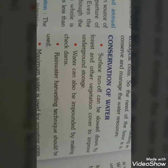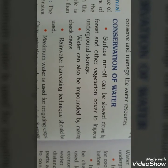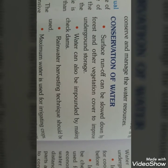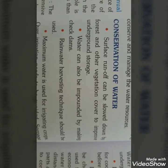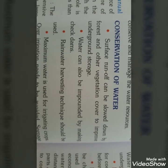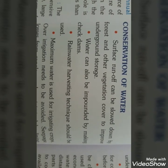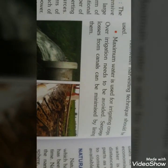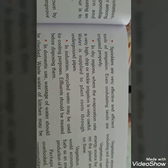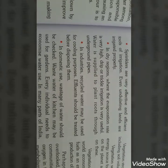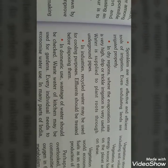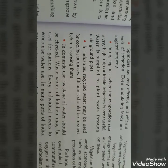Conservation of water — पानी के बहाव को धीमा रखना चाहिए ताकि underground water का level नीचे ना जाए। ज़्यादा से ज़्यादा dams बनाकर पानी conserve करना चाहिए। Rainwater harvesting की technique adopt करनी चाहिए। Over irrigation से बचना चाहिए, canals बनानी चाहिए, sprinkler system irrigation के लिए use करना चाहिए। Dry regions में जहाँ evaporation rate ज़्यादा है, वहाँ underground pipes से water supply होनी चाहिए।